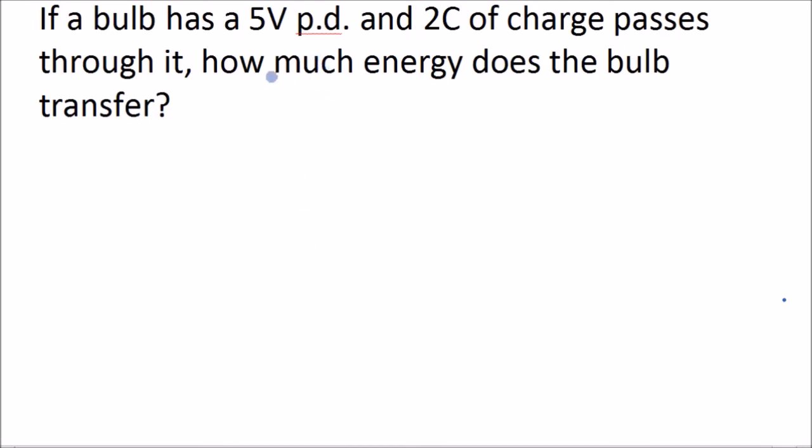Okay, so it's telling us the potential difference, 5 volts, and it's telling us that 2 coulombs of charge passes through it. And it wants to know how much energy the bulb transfers. So the equation we've got to use is this one.